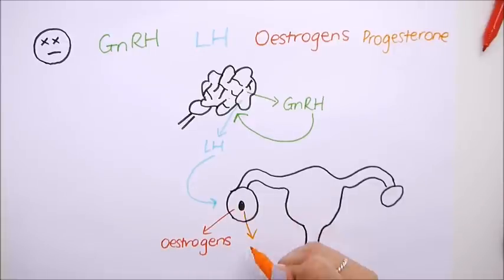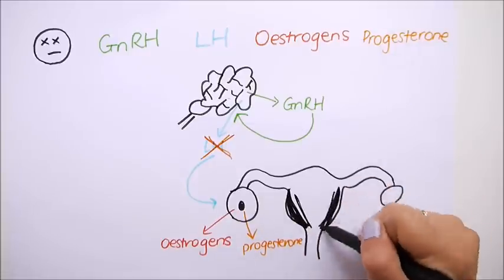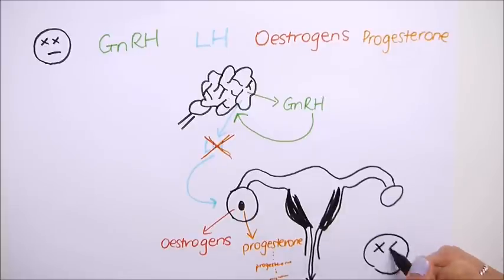Oestrogen and progesterone stop the release of luteinising hormone as well as making the lining of the endometrium thicker. As the levels of progesterone tails off, the lining starts shedding and you get your period. The cycle starts all over again.